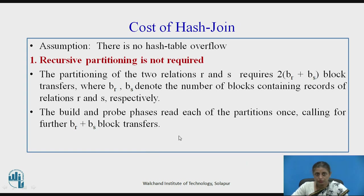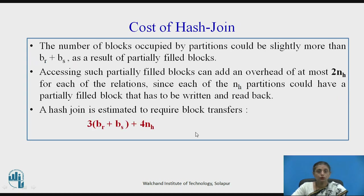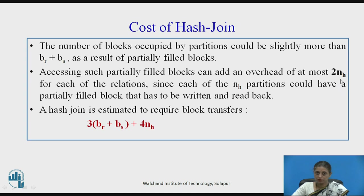Now let us look at the cost of hash join, checking two cases: with and without recursive partitioning. Without recursive partitioning, partitioning both relations r and s requires 2*(Br + Bs) block transfers, since the entire relation must be read and written. The build and probe phases read each partition once, requiring another Br + Bs block transfers. So total block transfers are 3*(Br + Bs). Partially filled blocks add at most 4*Nh overhead, giving total block transfers of 3*(Br + Bs) + 4*Nh.